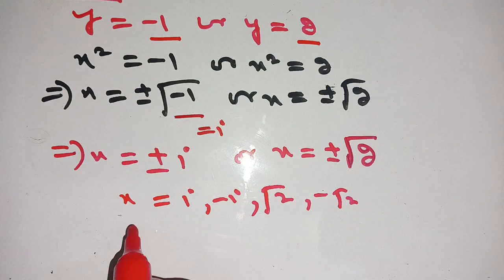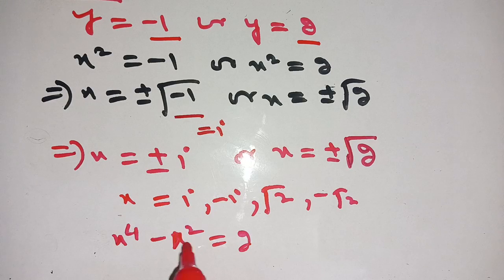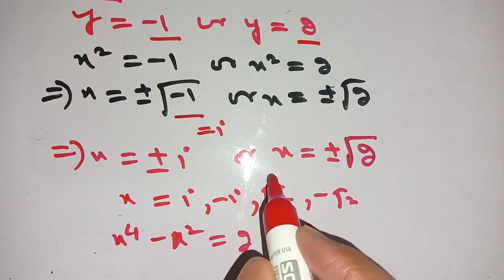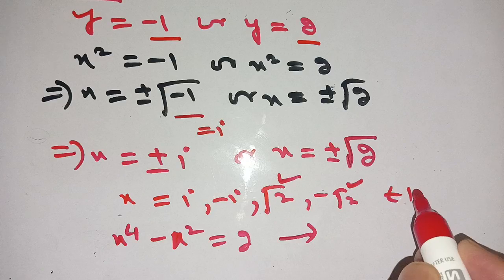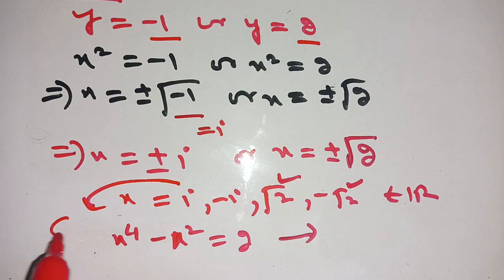Thus, these values satisfy our equation x power 4 minus x square is equal to 2. It has four roots. These roots are square root 2 and minus square root 2, which belong to real numbers, and iota and minus iota, which belong to complex numbers.